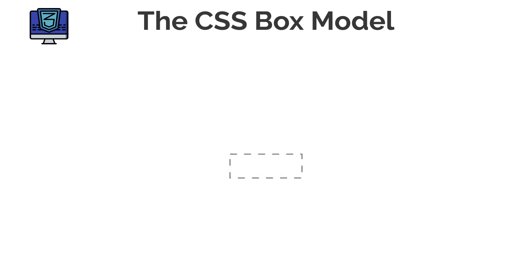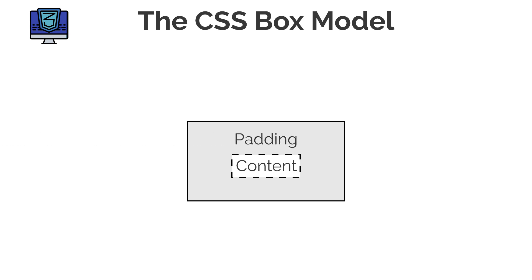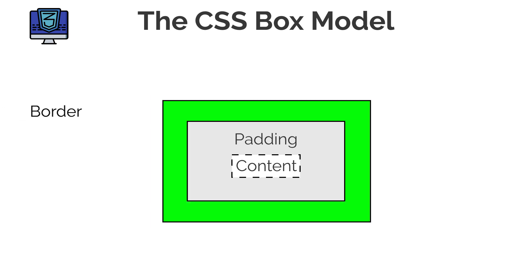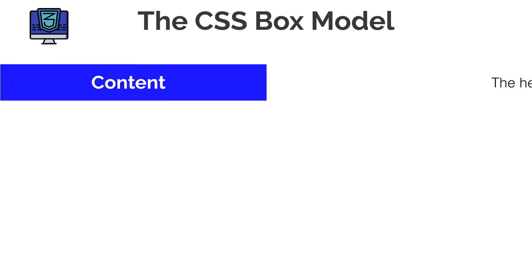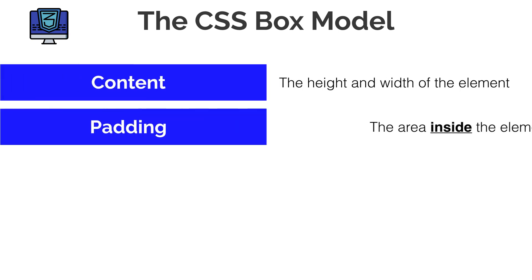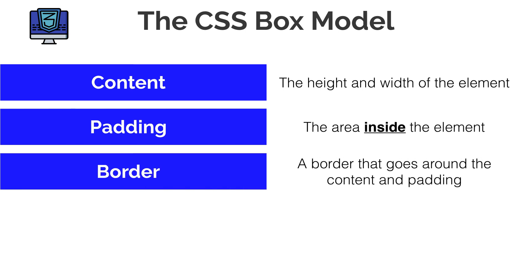Let's look at this in a bit more detail. The content could be a paragraph element, a div, whatever. Then outside of that we have the padding — what we mean is that it increases the spacing between the content and the border. Then we have the border, which goes around the padding and the content. And then finally we have the margin, which is the spacing and area outside of our element, outside of the border. To recap: content is the height and width of the element, padding is the area inside the element, border goes around the content and the padding.